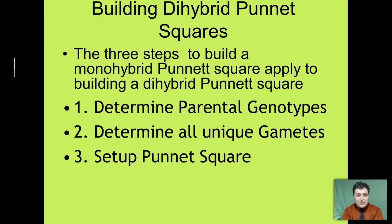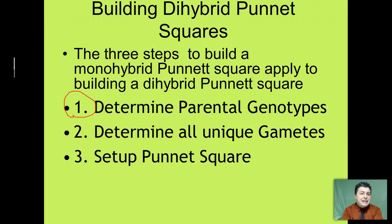So how do we produce a Punnett square when looking at two traits at the same time? We call these a dihybrid cross because we're crossing two traits simultaneously. There are three good steps to use when building a Punnett square — steps that can be used in any Punnett square, even our simple monohybrid or single-factor crosses. Step one: what are the parents' genes? Step two: what are the parents' unique gametes during meiosis? And then, only once we determine that, can we set up our Punnett square.